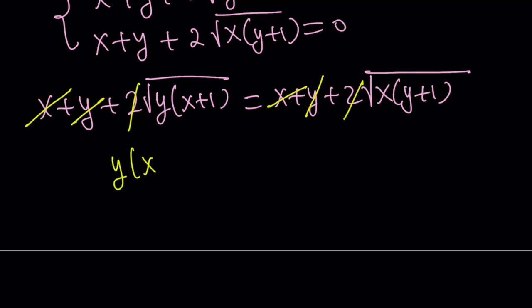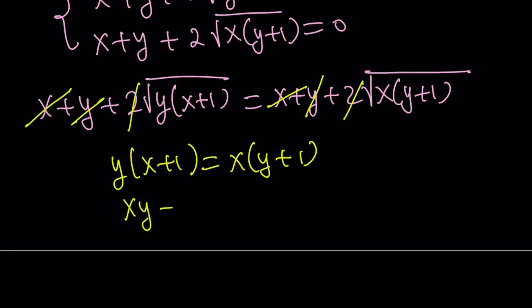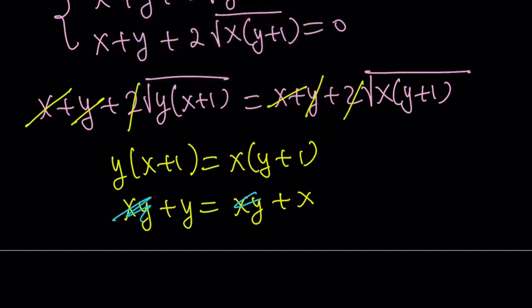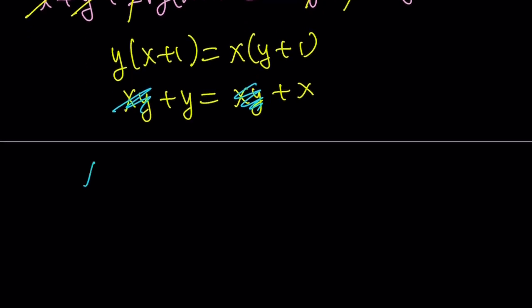Distributing, we get xy plus y equals xy plus x. The xy cancels out, and we end up with x equals y, which is awesome.